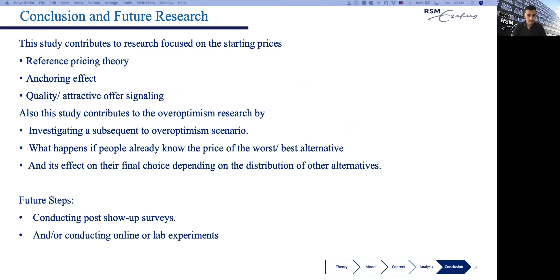As for the conclusion, this study contributes to the body of previous studies on starting prices as price cues, reference price theories involving anchoring effect, and quality or attractive deal signaling literature. Also, with this study, we contribute to overoptimism research by showing a subsequent overoptimism scenario. What happens if people already know the value or price of the worst or best alternative? And the effect and subsequent effect on their choice, on their conversion, on their paid price, and of course on the discounts, depending on the distribution of other prices in the range.